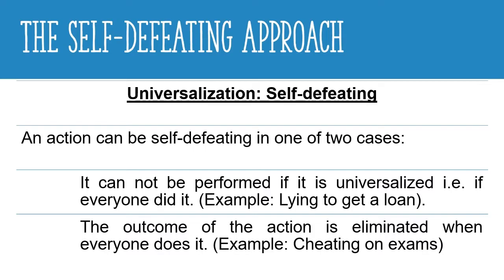The other way an action can be self-defeating is if the result of the action is eliminated. For example, if someone cheated on an exam to get better grades than classmates — if everyone cheated, all students would get good grades, so there is no difference between them. The assessment becomes pointless, and either the exam will be cancelled, rendered useless, or repeated. So the action itself becomes self-defeating because nothing is gained anymore.